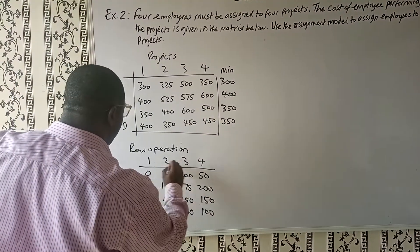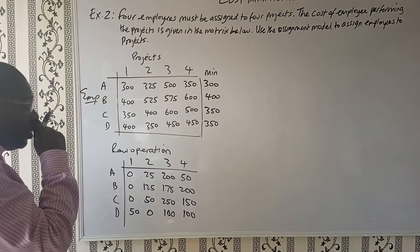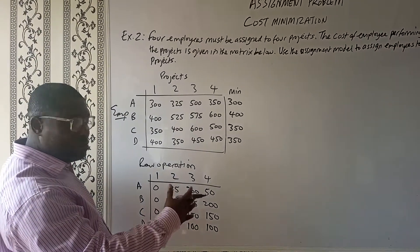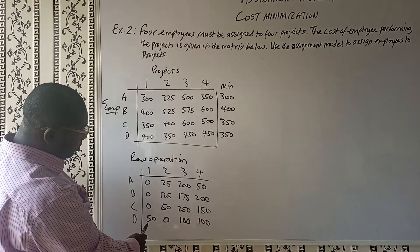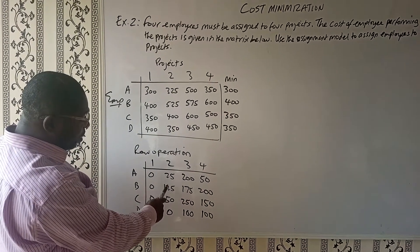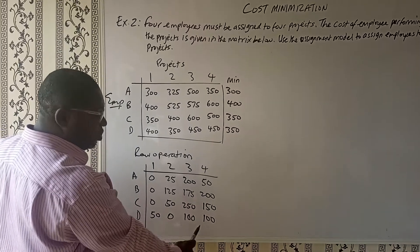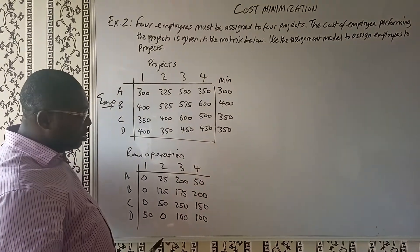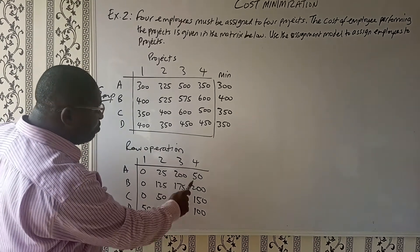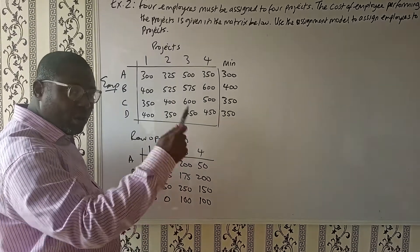We've completed our row operation. Now we check: is there any column without a zero? Column 1 has zeros, so no operation needed. Column 2 has one zero — zero minus zero is fine. However, we have two columns that do not have a zero. So we need to create zeros in those columns by identifying the minimum of each column and deducting it from itself and all members of that column.